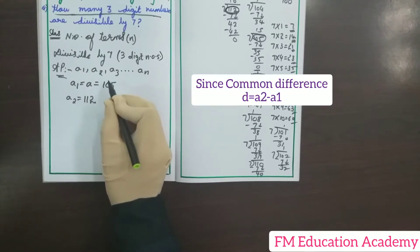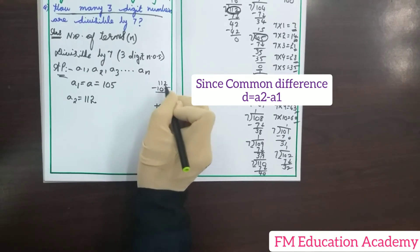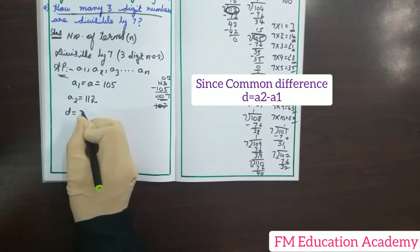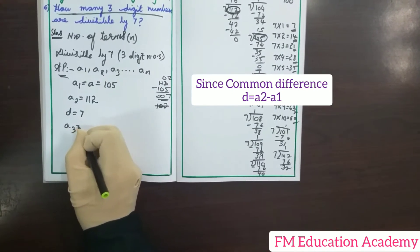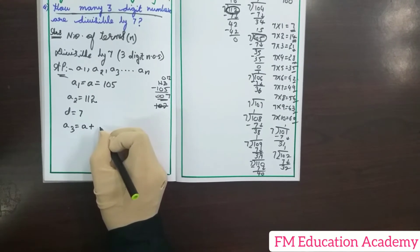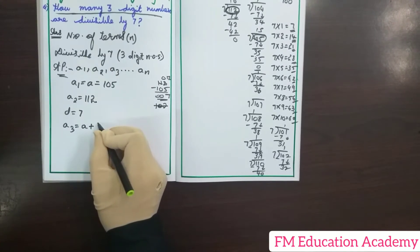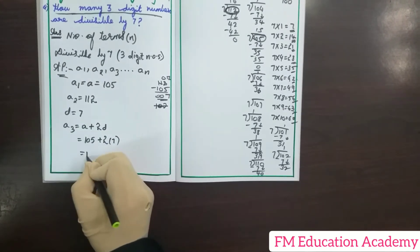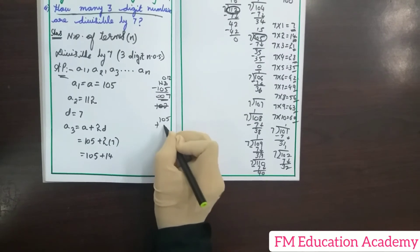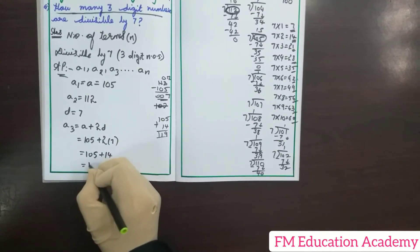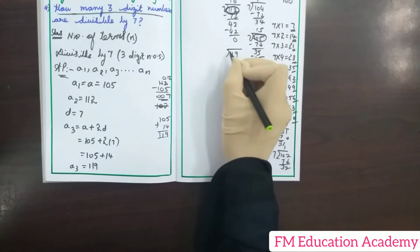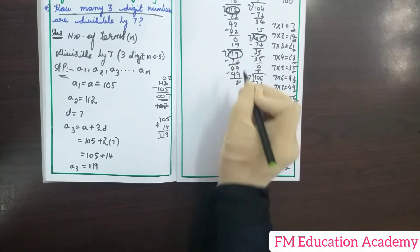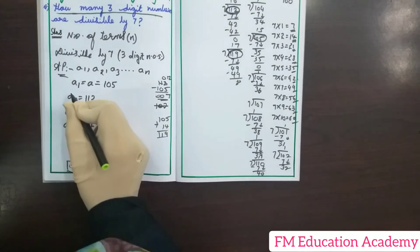The common difference is 112 minus 105 = 7. Since the common difference is 7, I can write the third term. Using the formula A₃ = A + 2D = 105 + 2×7 = 105 + 14 = 119. Verifying: 7 ones are 7, 11 minus 7 is 4, giving 49. We know 7 sevens are 49, so remainder is 0. The third term is 119. So I have the first term, second term, and third term of the AP series.